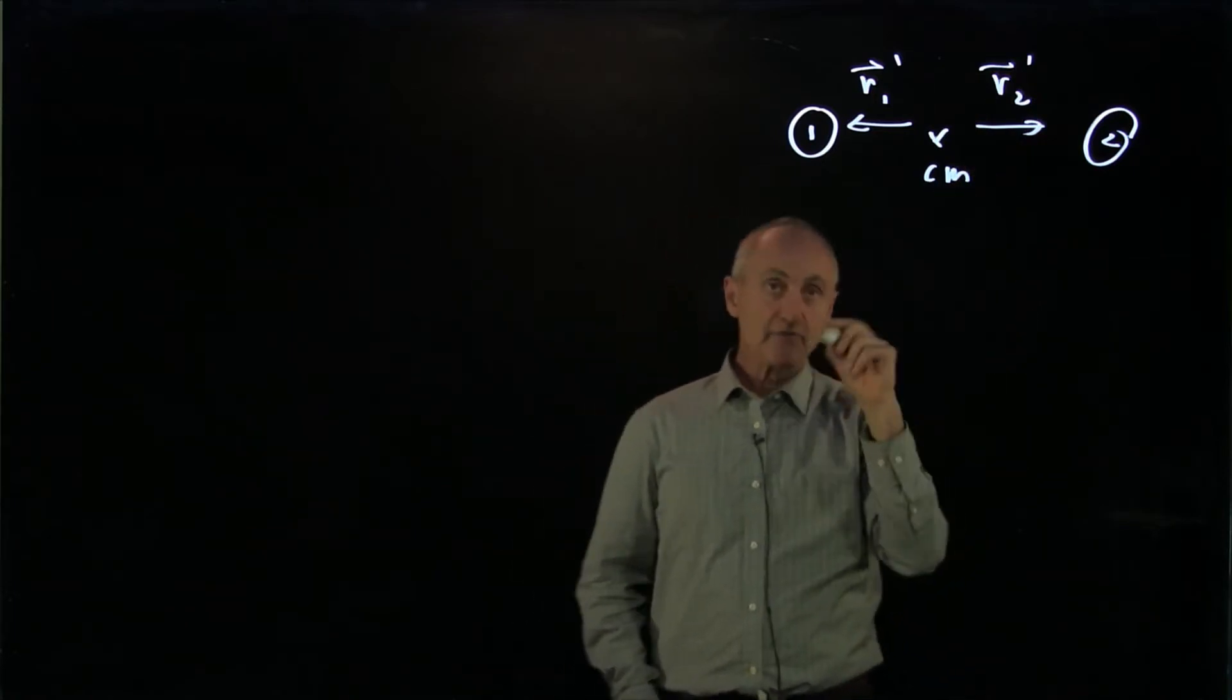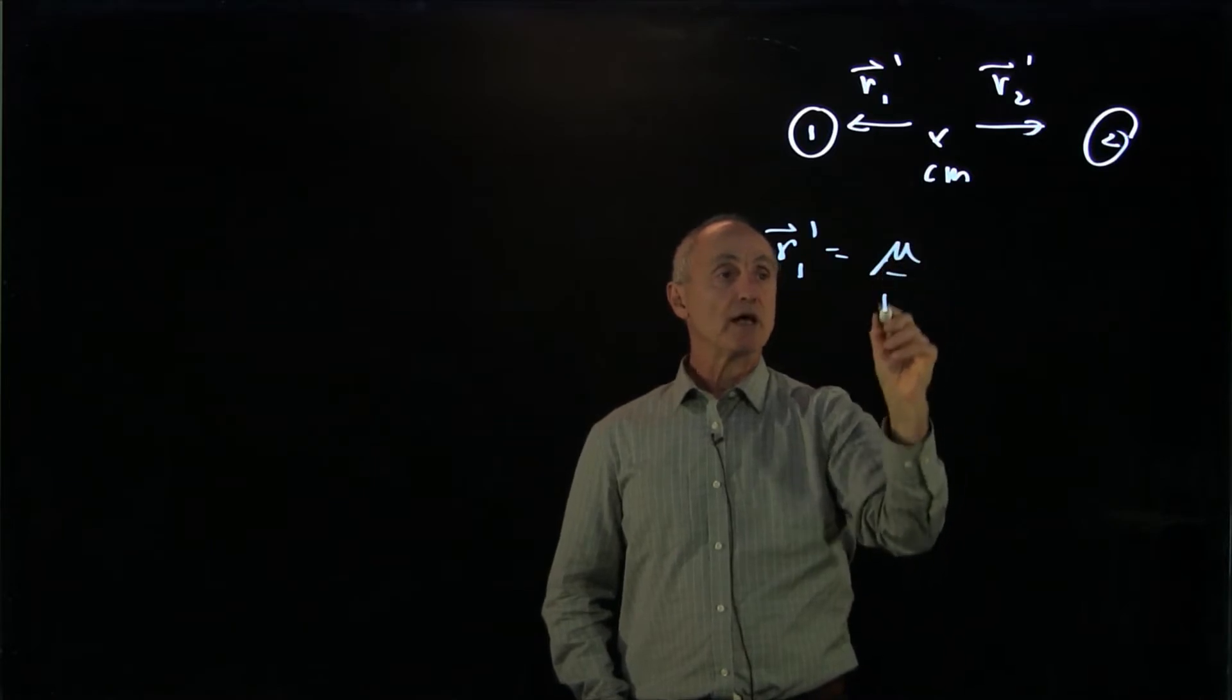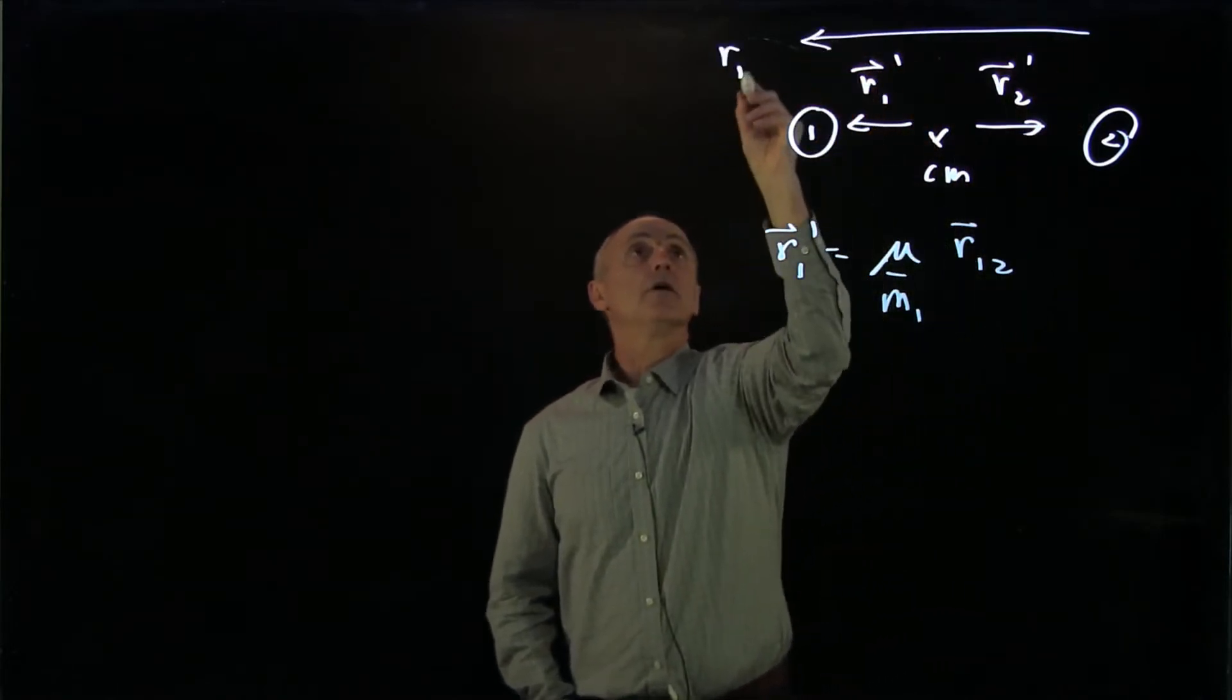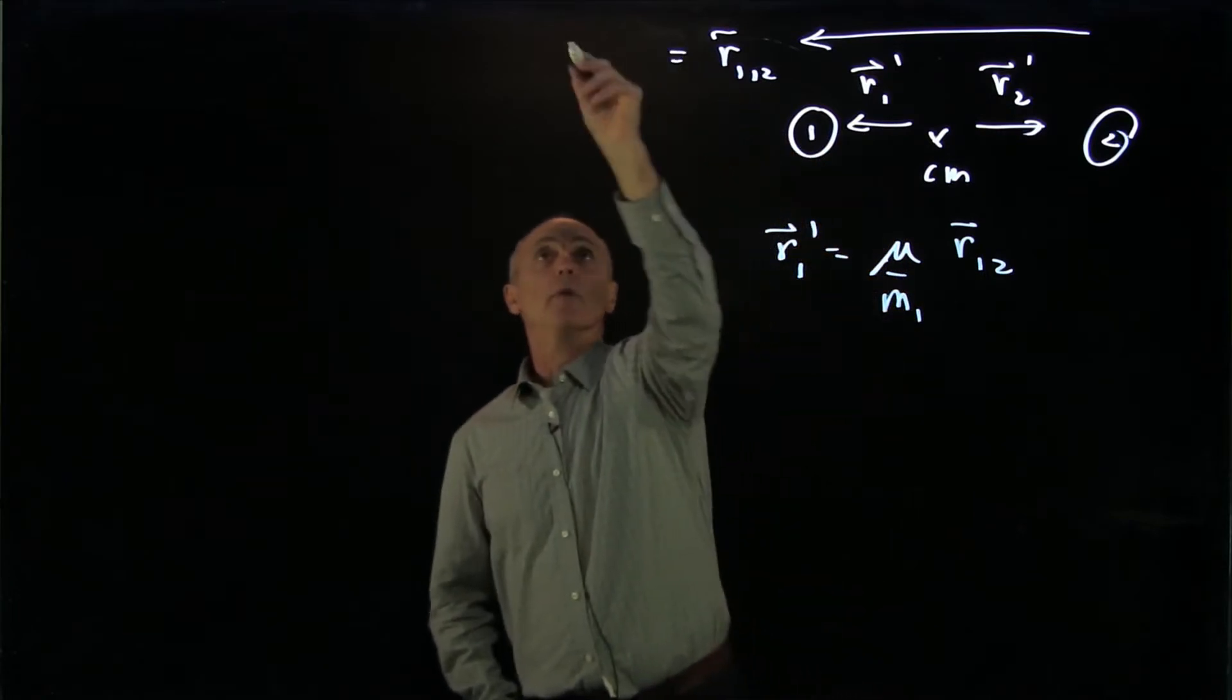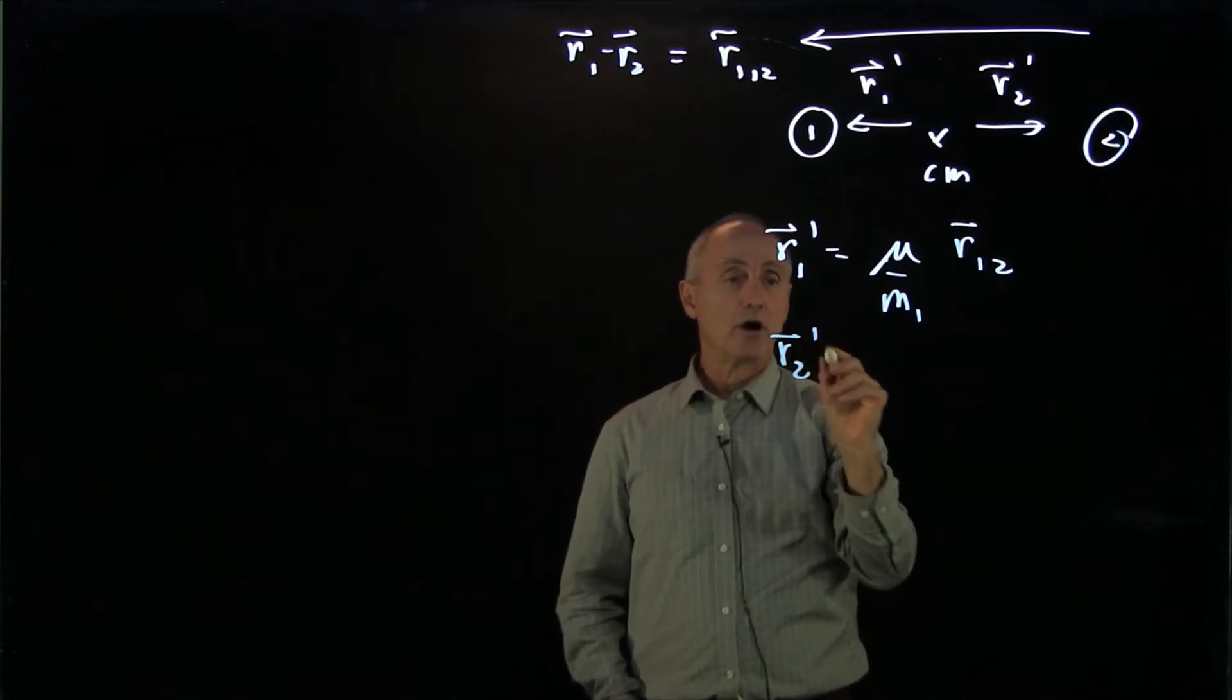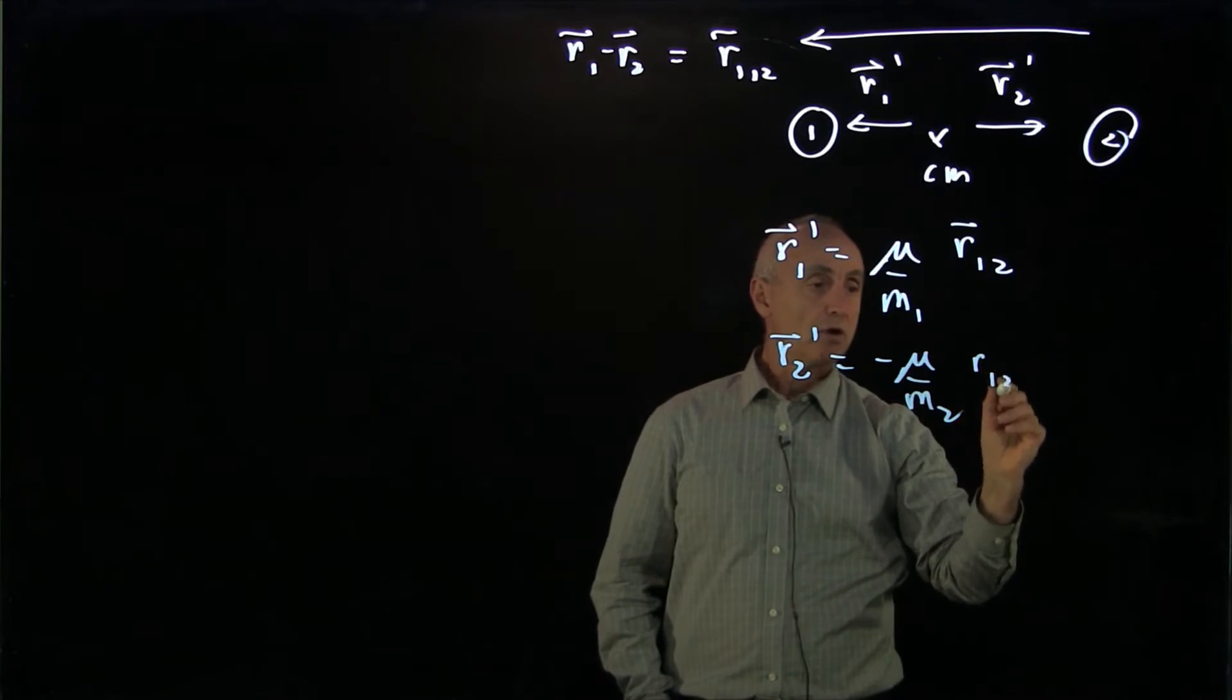Recall that we found that the position vector r1 prime was equal to the reduced mass mu over m1 times the relative position vector r12. I'll draw that up here, r12 from 2 to 1. And just to remind you, r1 minus r2. And likewise, the position vector r2 prime is minus mu over m2 times r12.